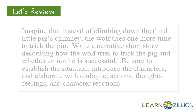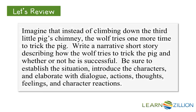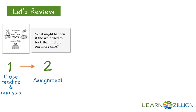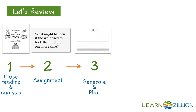Let's review. We are writing a narrative reading response to answer this prompt. We are going to imagine that instead of climbing down the third pig's chimney, the wolf tries to trick the third pig one more time. The first step of writing a response to a text is reading the text many times, thinking about different ideas and questions each time. The second step is to read the assignment or prompt and think about what it is asking you to write. In the third step, we generate ideas and make a plan. Now we are on the fourth step.